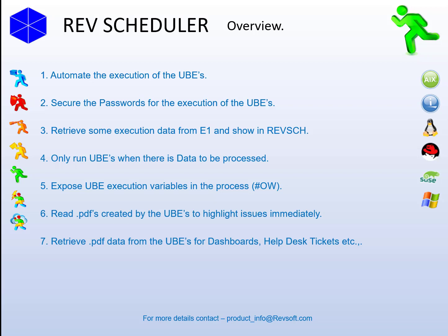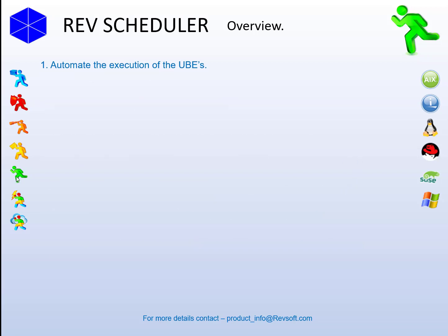The last task was: now we can read the PDF, how about retrieving some of the data or strings from the PDF and be able to use it. So we could run the GL post, see if there's any issues, and if there is, retrieve the GL batch number and use that in emails, dashboards, help desk tickets, etc. Now let's check those seven tasks in a little more detail.